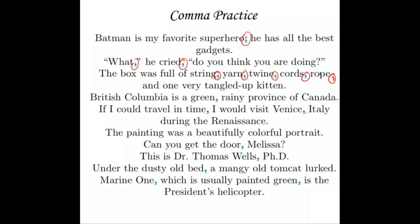Next: "British Columbia is a green, rainy province of Canada." We put the comma between the adjectives because we could say "a green and rainy province" with exactly the same meaning. Without the comma, it's unclear whether we mean the province is both green and rainy, or that it's a rainy province which happens to be green. The comma keeps people from getting mixed up. Next: "If I could travel in time, I would visit Venice, Italy during the Renaissance." "If I could travel in time" is a weak clause introducing a strong clause, so it gets a comma. And we separate the city from the country: Venice, Italy.